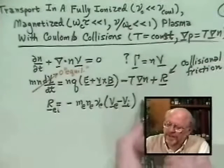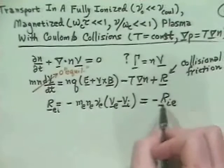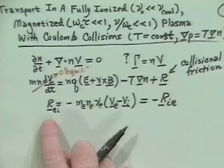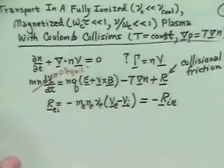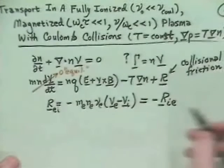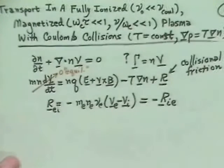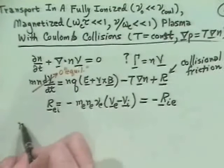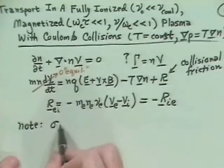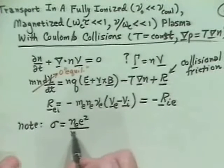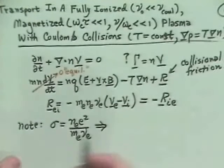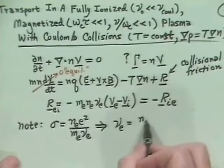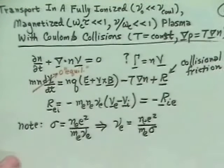Importantly, R_ei = −R_ie: momentum lost by the electrons in collisions is gained by the ions. To make Ohm's law easier to see, I note that the electrical conductivity σ = n_e·e²/(m_e·ν_e), so the electron collision frequency is ν_e = n_e·e²/(m_e·σ). Substituting that in, I can rewrite the electron-ion momentum transfer as: R = −m_e·n_e · [n_e·e²/(m_e·σ)] · (v_e − v_i).